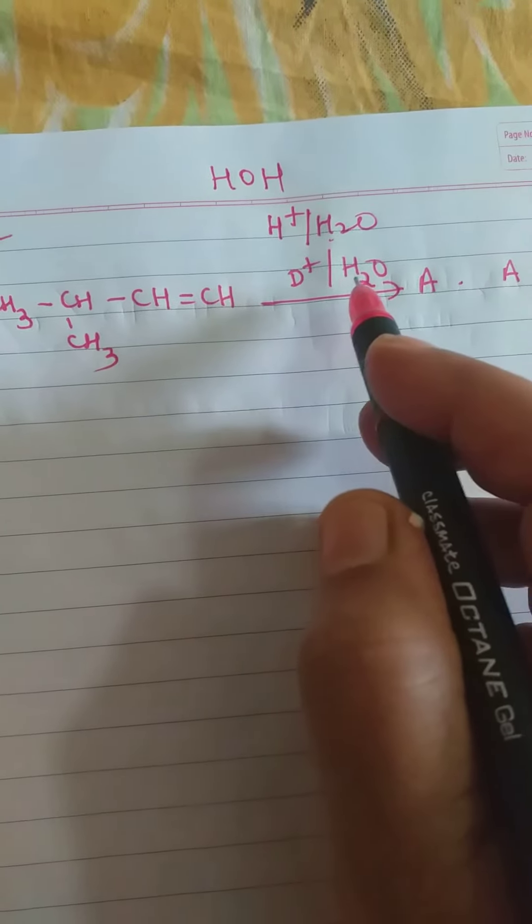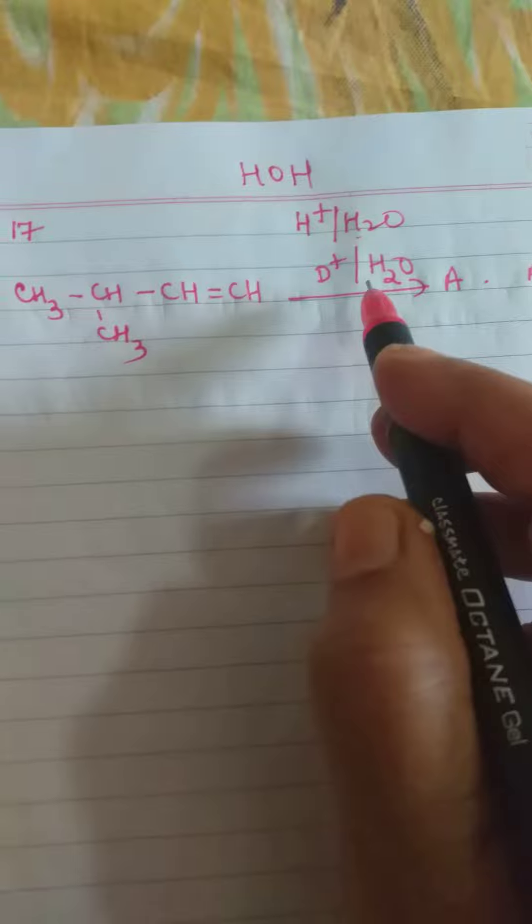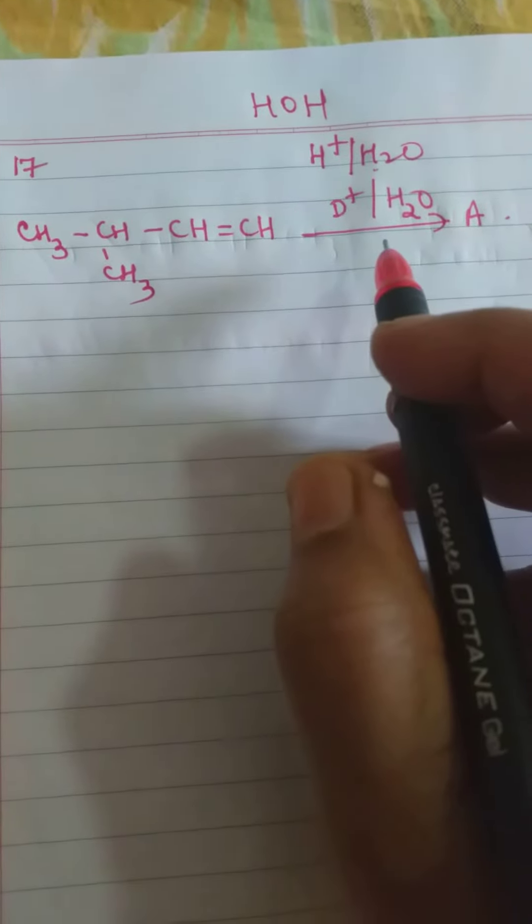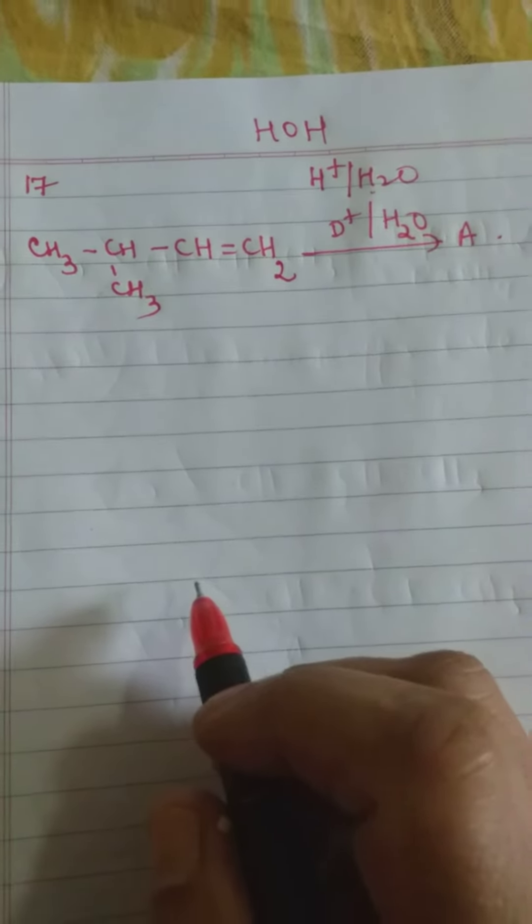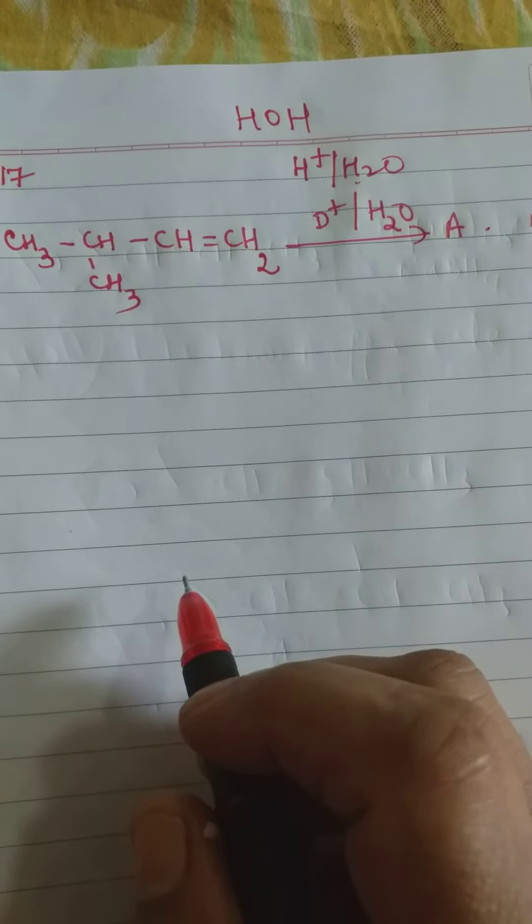You know that H and OH will add in case of acid hydrolysis. Here, D plus and OH will be adding. D plus and OH minus. Now, this is an electrophilic addition. Addition will take place across the double bond, and D plus or H plus will add to the carbon having more number of hydrogen atoms.